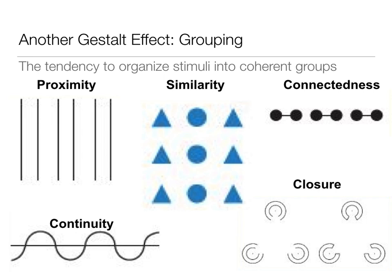Notice that symmetry is also a really important part of this — which is why that reversible figure-to-ground image was so symmetrical, allowing us to flip back and forth between the vase and faces.